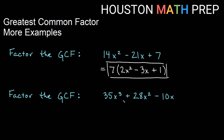Next: 35x cubed plus 28x squared minus 10x. Looking at 35, 28, and 10, they don't have anything in common except 1. Since 1 is the GCF and dividing by 1 doesn't change anything, we move to the variables. x cubed, x squared, and x all have at least one x, so the only thing we can factor out is a single x.